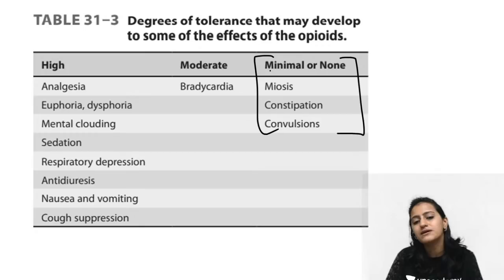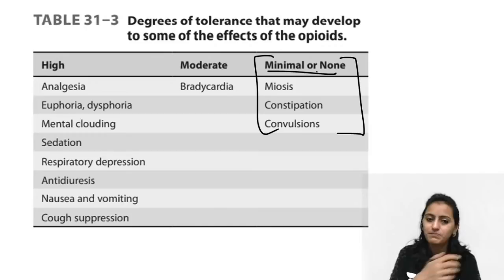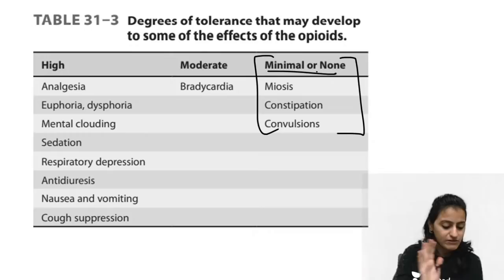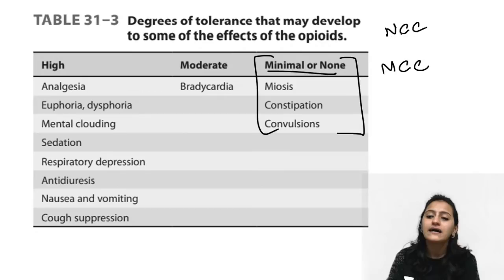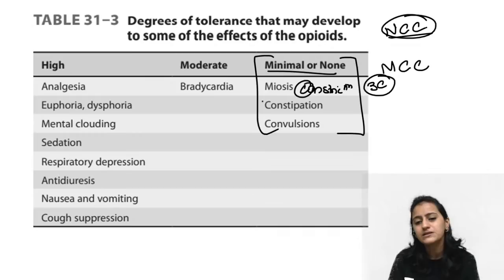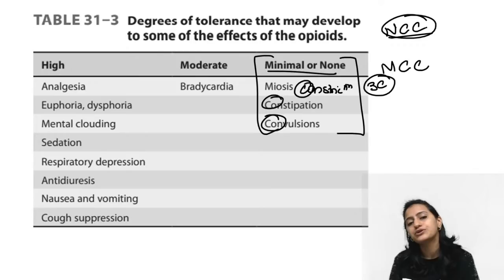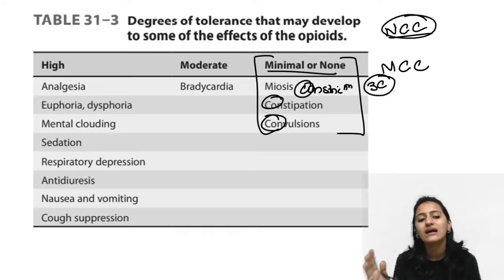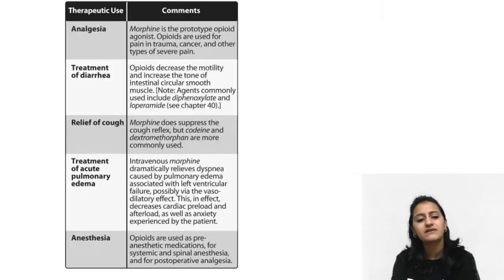Effects to which minimal or no tolerance develops with opioids — remember the three C's: Constriction of the pupil (meiosis), Constipation, and Convulsions. These effects persist regardless of chronic opioid use — no tolerance develops to these three.